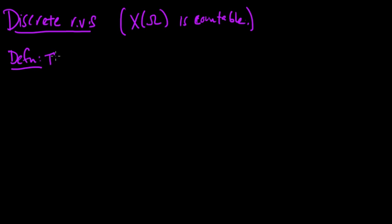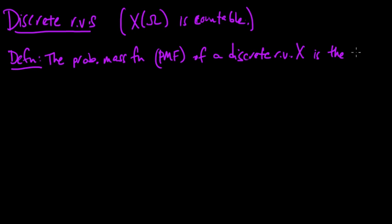Now, the probability mass function, which we abbreviate PMF, of a discrete random variable X is the function. I'll write it as a lowercase p from the real numbers to the interval 0 to 1, such that p of a number little x equals the probability that X equals little x.